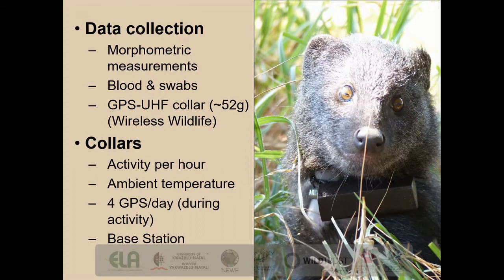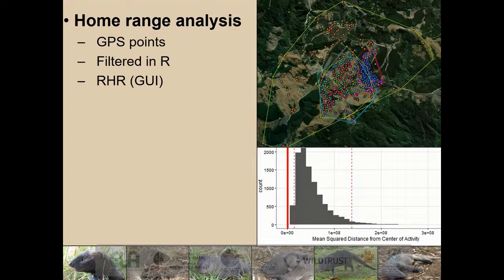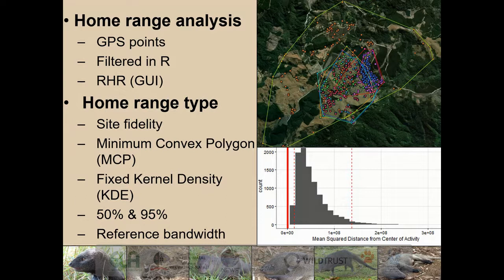The collars were programmed to record activity every hour, as well as ambient temperature, and to gather four GPS points per day during the species' activity times. All information was sent remotely to a base station that allowed us to gather these GPS points off-site. In terms of home range analysis, GPS points were first filtered in R, and then home range analysis was conducted in RHR, which is a GUI freely available on R. Site fidelity was first tested before any home range analysis was conducted to indicate whether the individual actually has a home range. Two home range measures were utilized: the minimum convex polygon (MCP) and the fixed kernel density (KDE) at both the core or 50% area, and a 95% confidence level or home range. We used the reference bandwidth for the fixed kernel density.